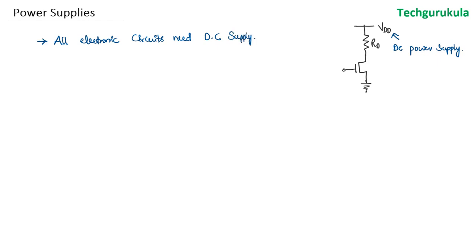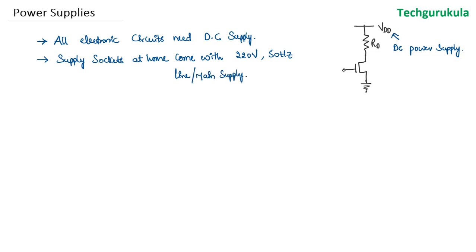The supply sockets at home, especially in India, come with 220 volt RMS at 50 hertz. We call that the line supply or the main supply. Now, this is an AC supply — alternating current — which has a frequency. But the circuits need direct current. So given that AC supply, we need circuitry in between to do the conversion.